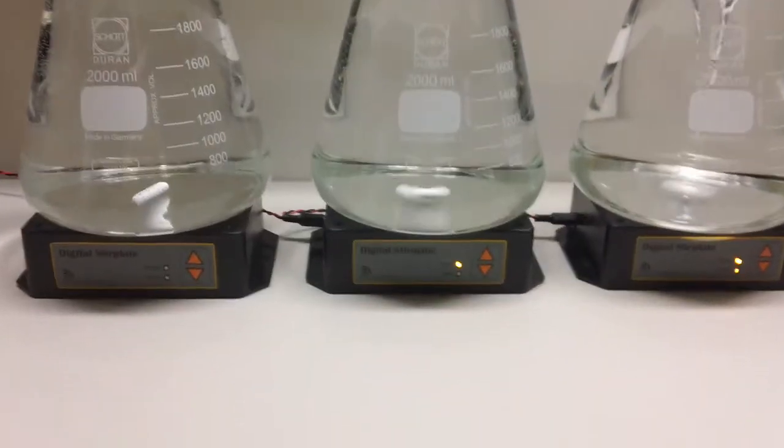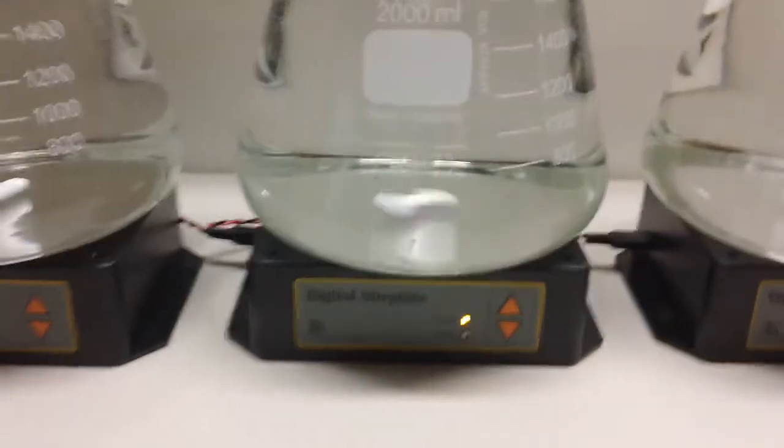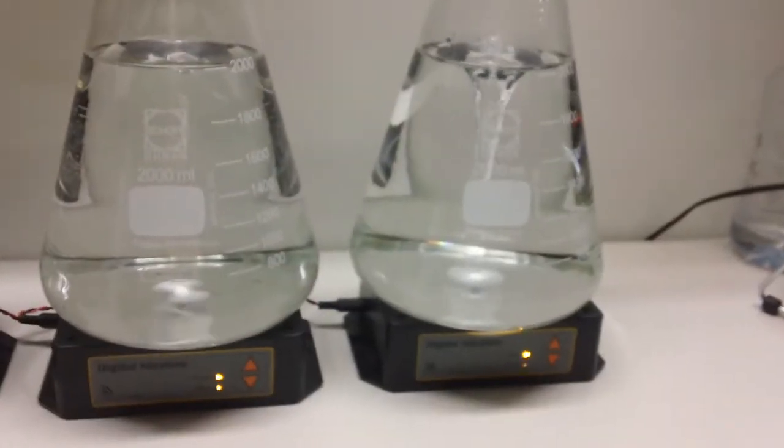To do this I've got three digital stir plates. One of them, the control, is not running at all. One's running at 500 RPM and this one's running at 1500 RPM which is a point where the vortex sometimes comes down and touches the bar.